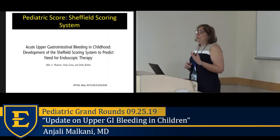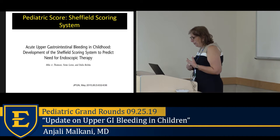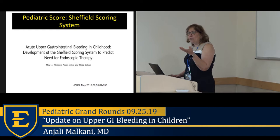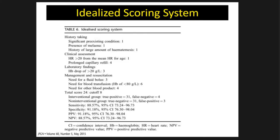Pediatrics is always falling behind adults in this area. A British gastroenterologist developed the Sheffield scoring system for children, which is gaining some use. It includes history, preexisting conditions, presence of melena, history of large hematemesis, heart rate, capillary refill, hemoglobin, and degree of resuscitation required. The maximum score is 24; a score above 8 indicates high likelihood of needing endoscopic intervention.